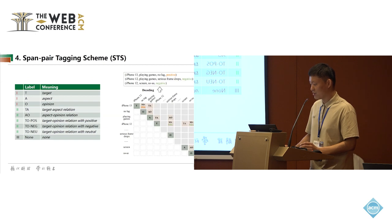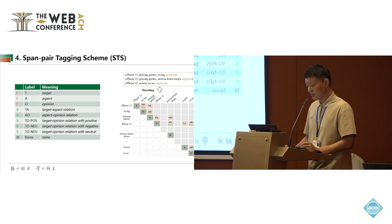Next, I will introduce span pair tagging scheme, STS. We define nine labels to tag the span level matrix, as shown in the table. The labels in part 1 denote term types. The labels in part 2 denote the relation between terms and sentiment polarities. The known label denotes invalid spans. Concretely, as shown in the figure, we enumerate all spans, such as iPhone 13, no lag, playing games, to construct the span level matrix.